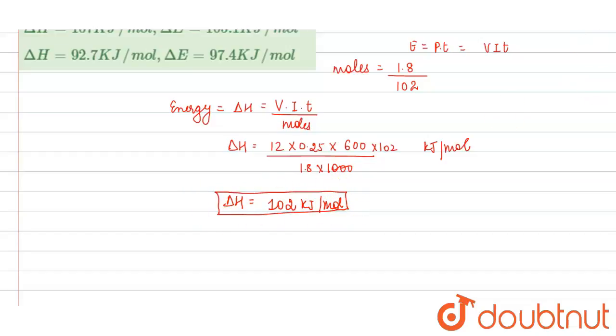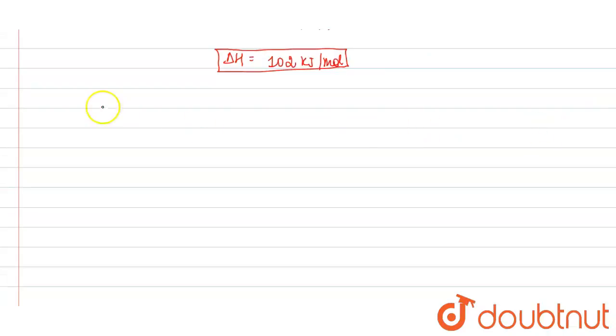Now for calculating the internal energy, we will use the formula delta H is equals to delta U plus delta n RT. This will be used. So delta H we have calculated is 102 kilojoule per mole.